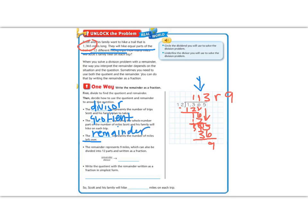The remainder represents 9 miles, which can also be divided into 12 different parts, one for each day. And written as a fraction. So we write the remainder, 9, over the divisor, which is 12.